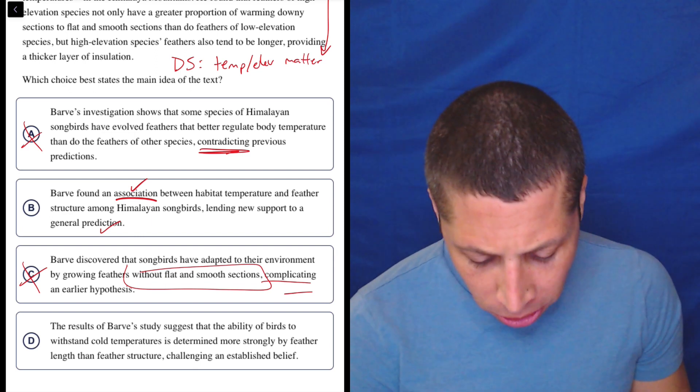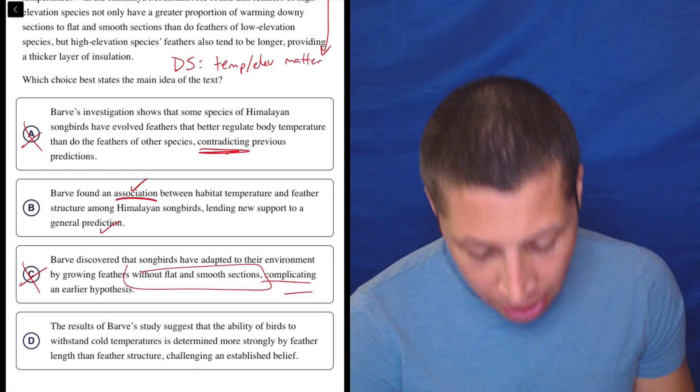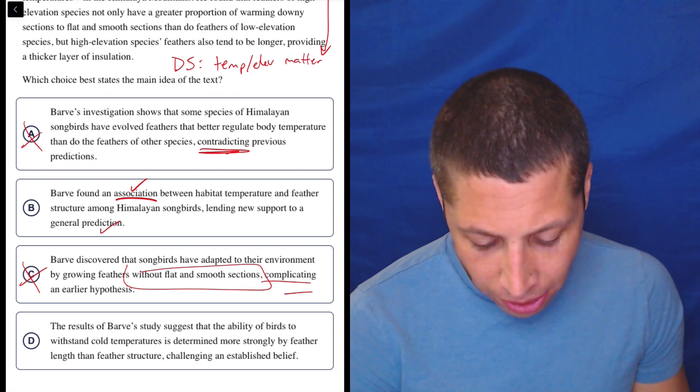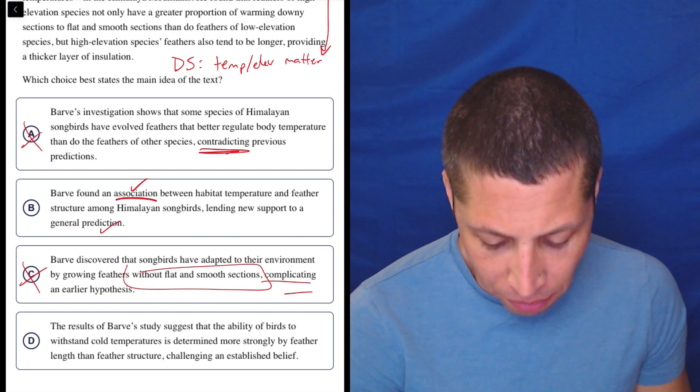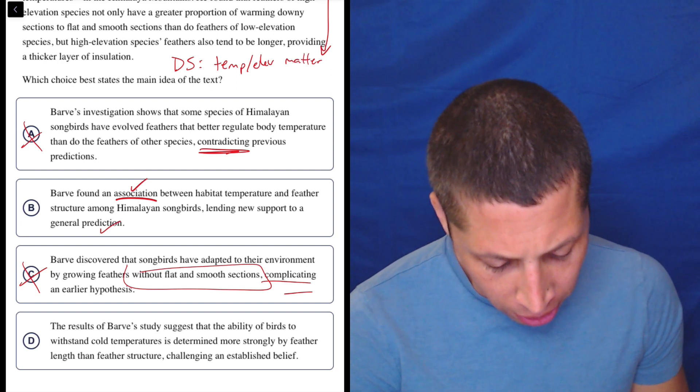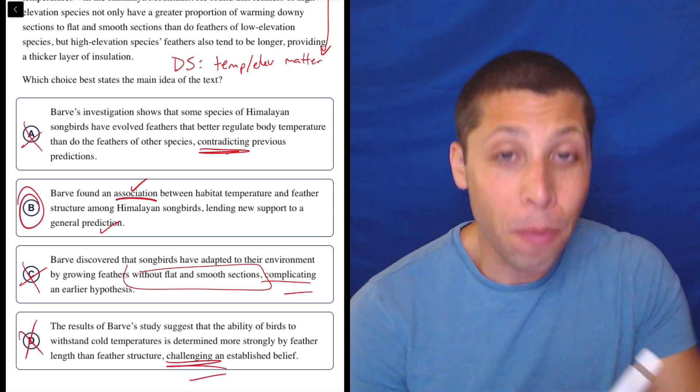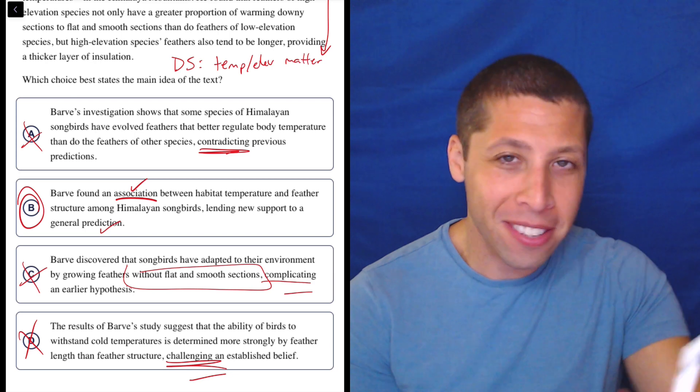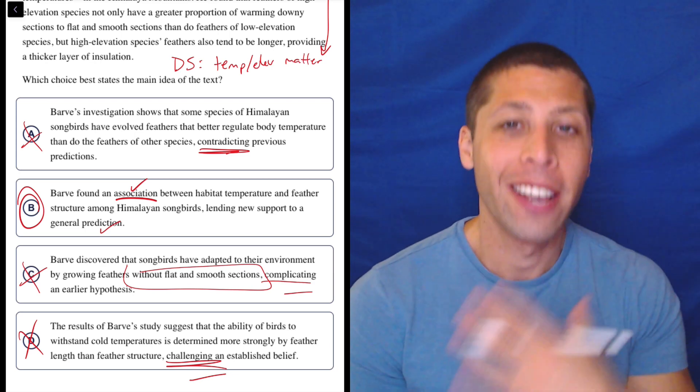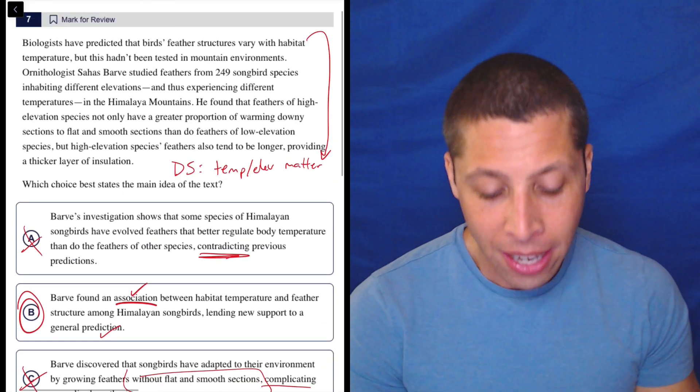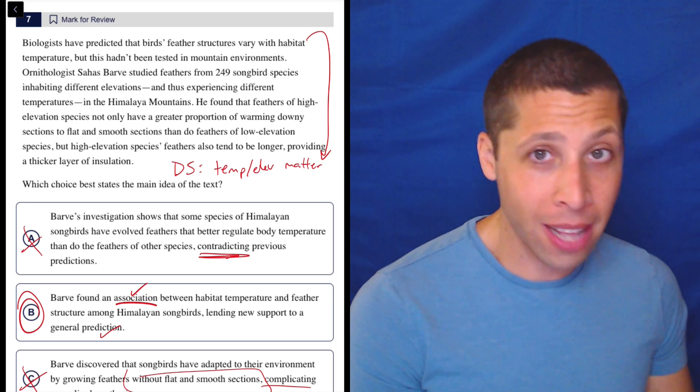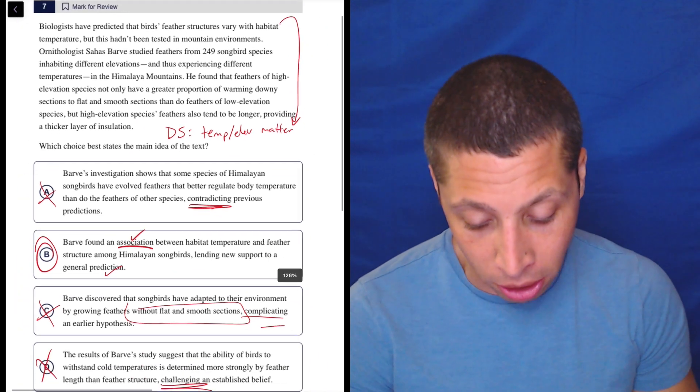D, the results of Barve's study suggest that the ability of birds to withstand cold temperatures is determined more strongly by feather length than feather structure, challenging an established belief. Again, no, no, right? So maybe all that other stuff about the feather size comes up in here. I don't care. This, this, they had a theory that temperature mattered. They supported that theory. We're good. That's all I needed. B is definitely the answer.